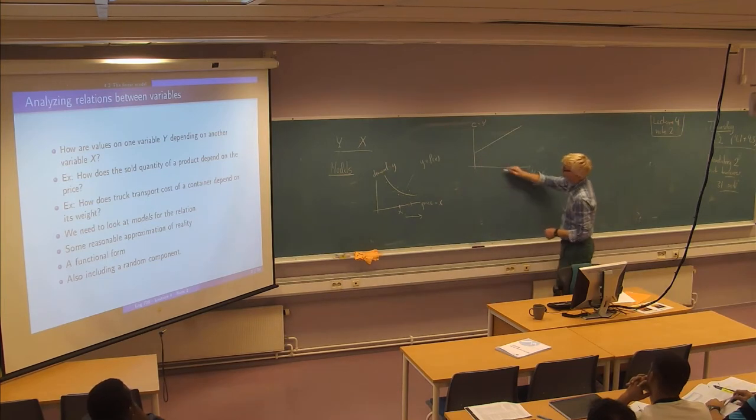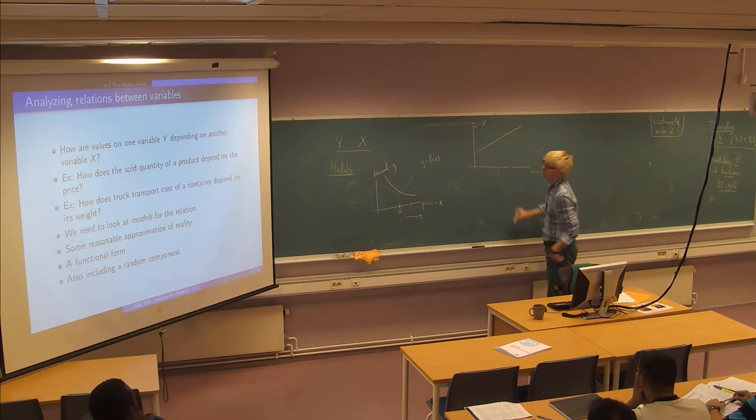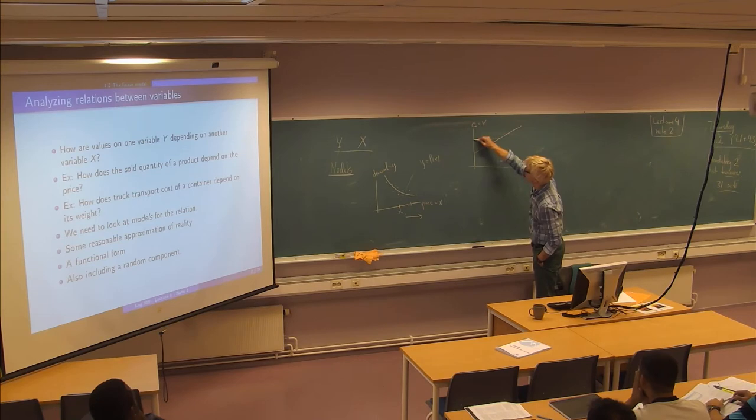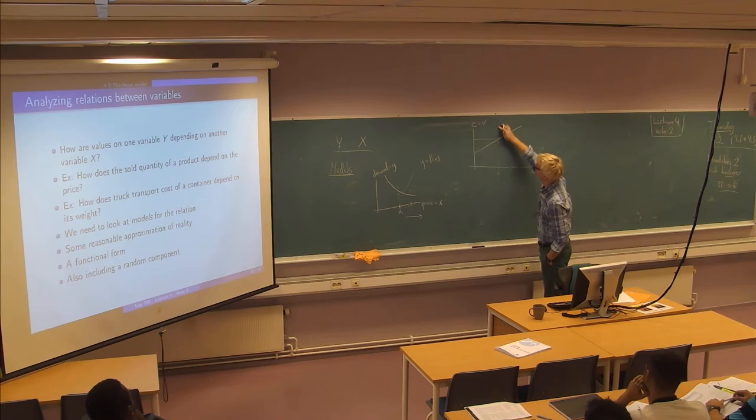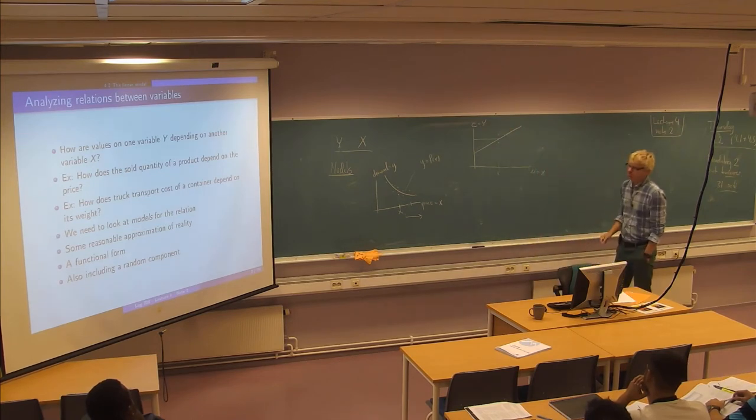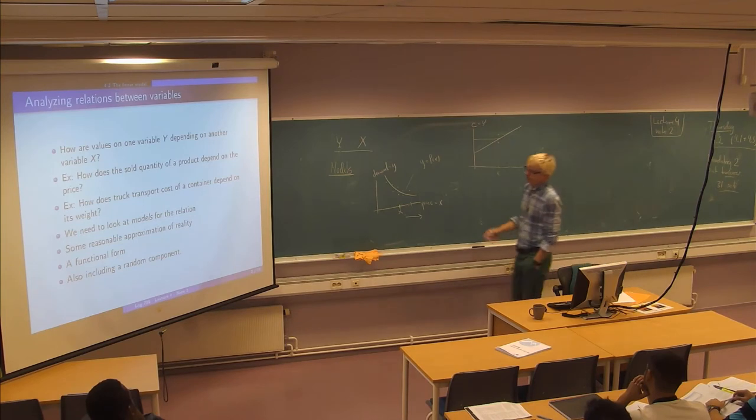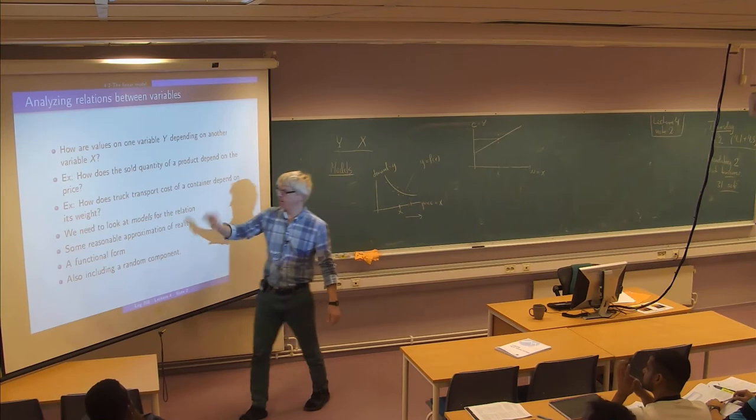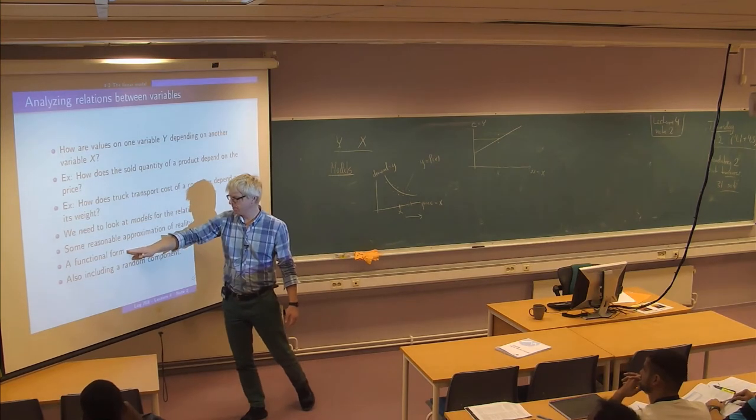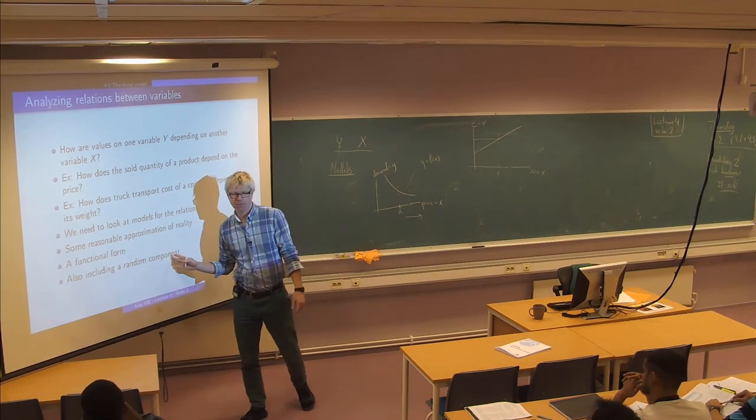And similarly here, if I take a particular weight here, I can estimate the cost with this curve, but maybe the true cost could be a bit lower or a bit higher. So this is very essentially what we are going to do. We're going to have a model that consists of a functional form and a random component.